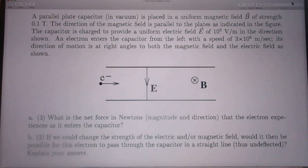Second question, which is more important. If we could change the strength of the electric and or magnetic field, would it then be possible for the electron to pass through the capacitor in a straight line, thus undeflected? Explain your answer.